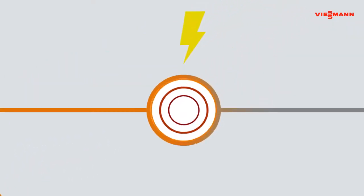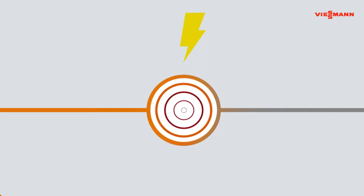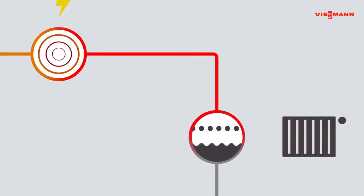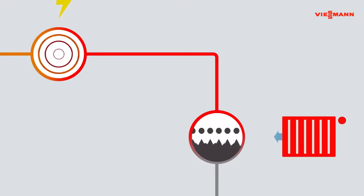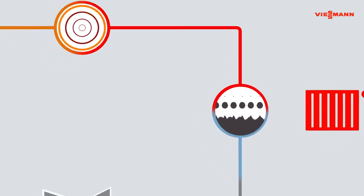A compressor then compresses the hot refrigerant vapor. This makes it very hot. The hot refrigerant steam then transfers its heat to the heating circuit. In the process, it cools down and becomes liquid again.